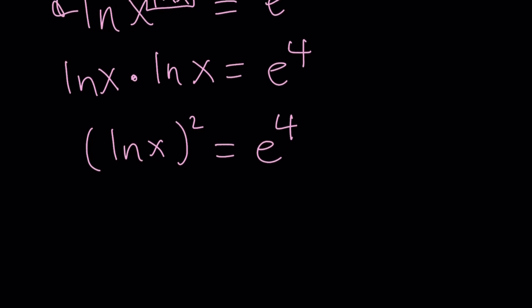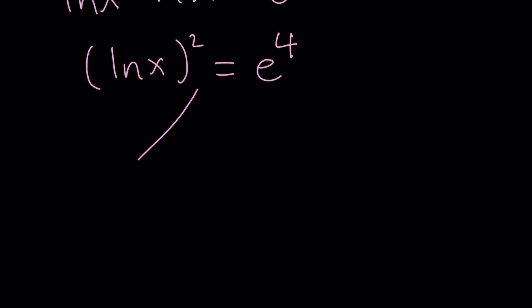So what does that give us? Two solutions. If something squared equals a positive number, then when you square root, you have to use absolute value, and that gives you two different values. One of them is ln x equals the square root of e to the fourth power, which is e squared, and the other one is going to be the opposite of this. Because if you square negative e squared, you get e to the fourth power. So we got two solutions.